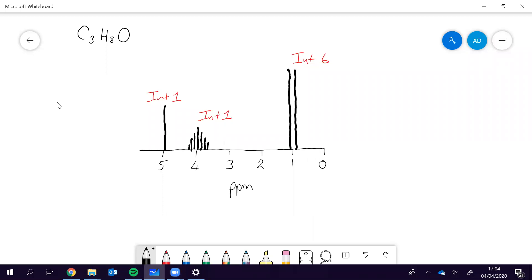Okay, so here we're going to try and work out the structure of this molecule with molecular formula C3H8O from its 1H NMR spectrum.